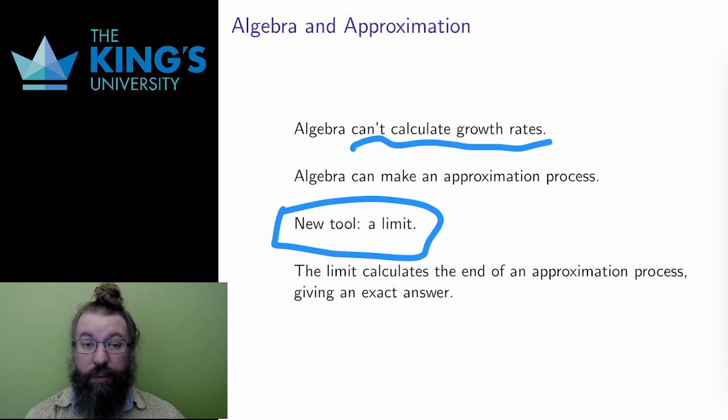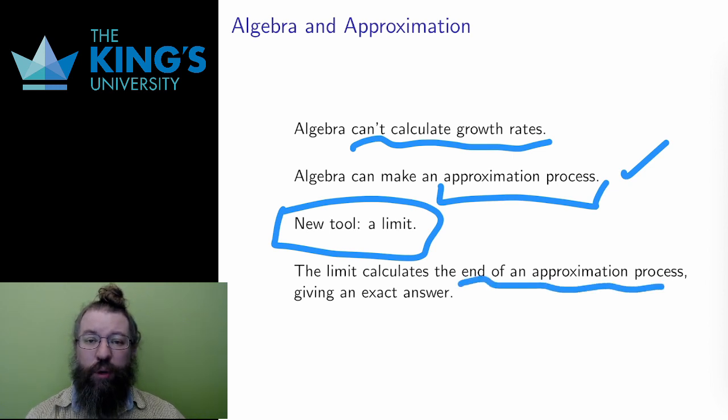So, what is a limit? It is a way to deal with an approximation process. Algebra can approximate many of the complicated aspects of a dynamic process, and a limit tries to get to the end of an approximation. And it is about process. It is about the approach to something.